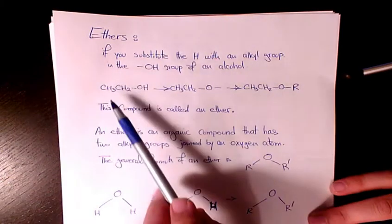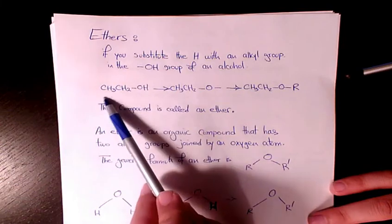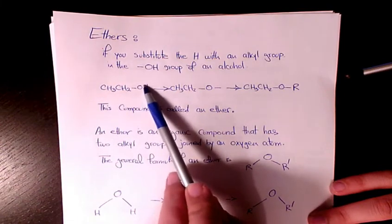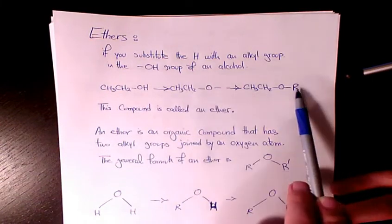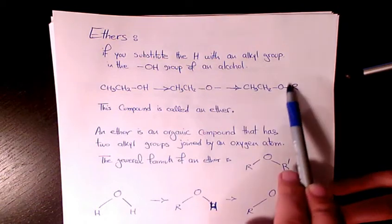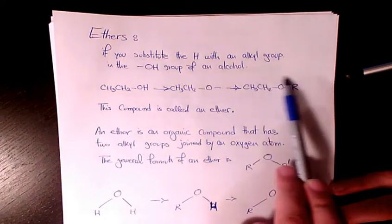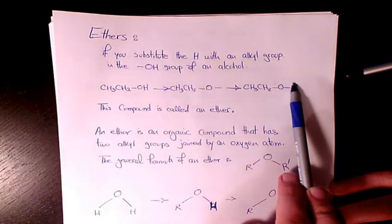can have an ether. For example, here you have ethanol. When you take the hydrogen out it's going to be like that, and when you attach another alkyl group it's going to be like that, which we call an ether.